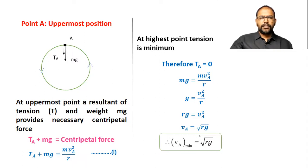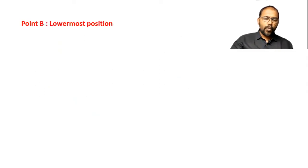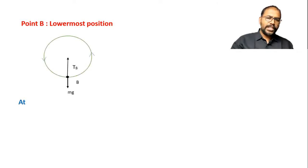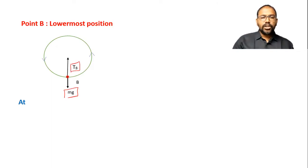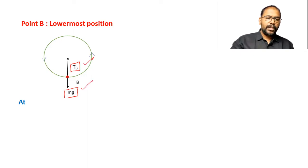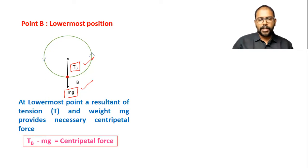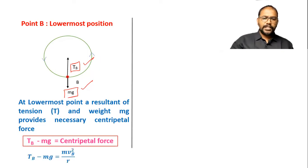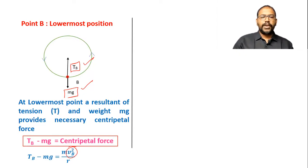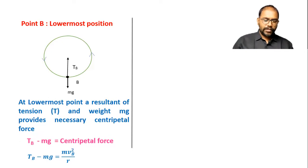Next, we consider the lowest position B. Again at the lowest position, we obtain an expression for speed. At point B, you can see the direction of mg and direction of tension — they are in different directions, so the resultant is tension minus mg, providing the centripetal force. We can write: TB − mg = mv²B / r. This is the equation at point B.